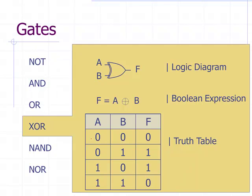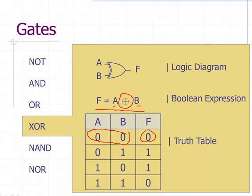The next one is XOR. The XOR symbol looks like an OR symbol but adds an extra notation. The Boolean expression uses the XOR symbol: A XOR B. Looking at the truth table: if both inputs are zero, you get a zero; if both are one, you get a zero again; if the inputs are mixed, you get a one. So basically, if both inputs are the same you get a zero, and if the inputs are different you get a one.